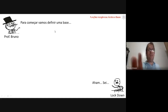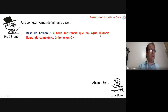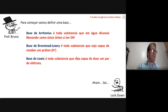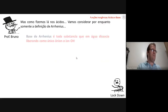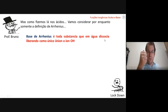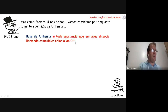Now, bases. An Arrhenius base is every substance that in water dissociates — not ionizes, because bases are ionic compounds — releasing OH− as the only anion. Unlike an acid that releases H+ as the only cation, a base releases OH− as the only anion.